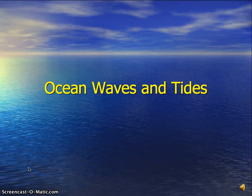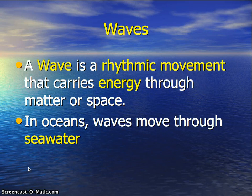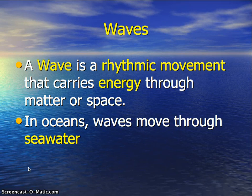Today we're going to talk about ocean waves and tides, which is the last set of notes for this school year. A wave is a rhythmic movement that carries energy through matter or space. You can have lots of different types of waves — sound waves, light waves, ocean waves — all different types of energy moving through some sort of matter or space in a rhythmic pattern.